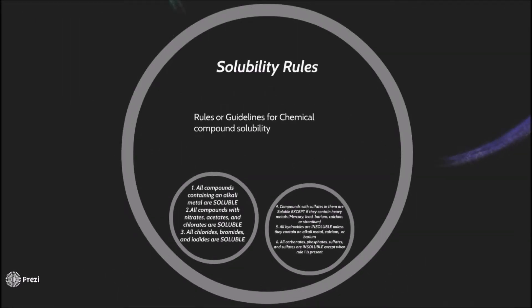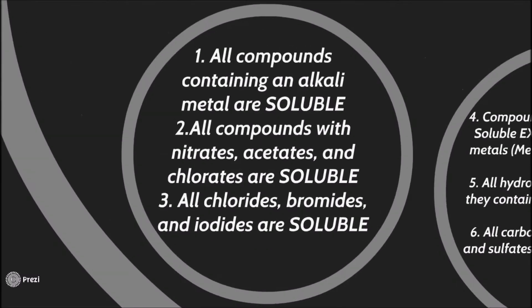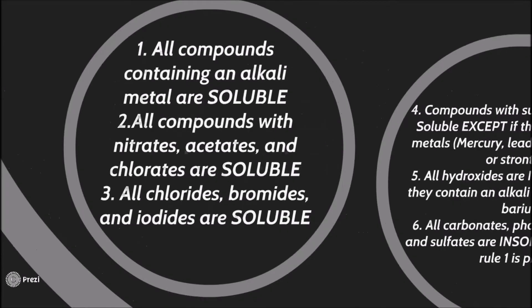Solubility rules. Rules or guidelines for chemical compound solubility. The first rule is all compounds containing an alkali metal are soluble. The second rule is all compounds with nitrates, acetates, and chlorates are soluble. The third rule, all chlorides, bromides, and iodides are soluble.